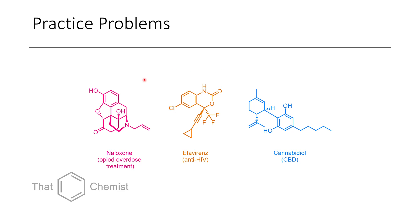Before the next episode, I'd encourage you to do a few more practice problems. I've included some interesting examples: naloxone, used for opioid overdoses, which is especially important given the ongoing opioid crisis in North America with fentanyl. There's also efavirenz, used for treatment or prevention of HIV — it's got some unique things going on, so see if you can name those groups. We also have CBD, used in many consumer oils for personal use. If you have any questions, leave a comment. If you have suggestions for formats, I'd be happy to hear them. Like and subscribe if you'd like, and have a great day.